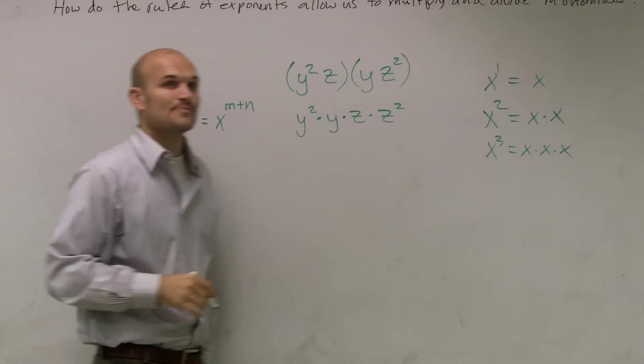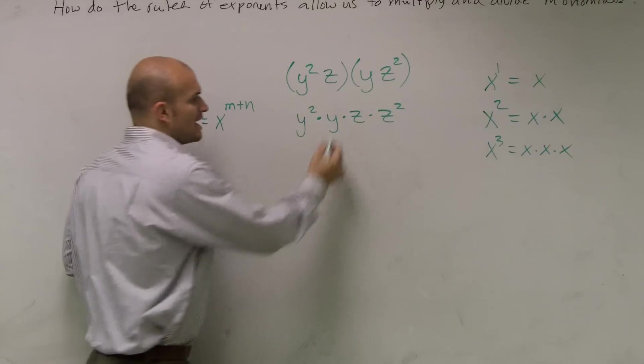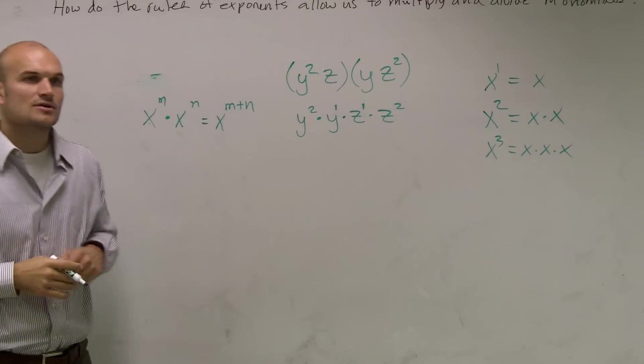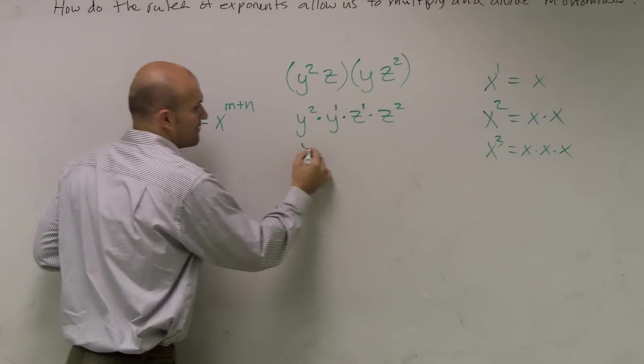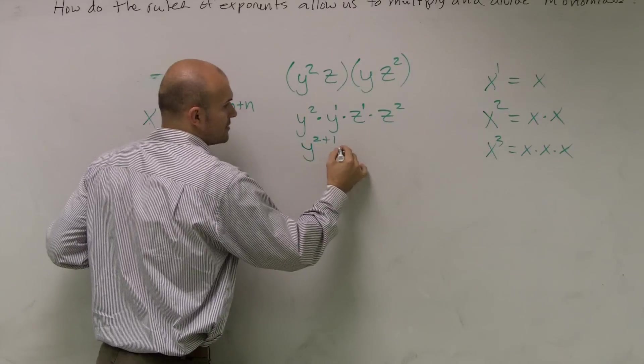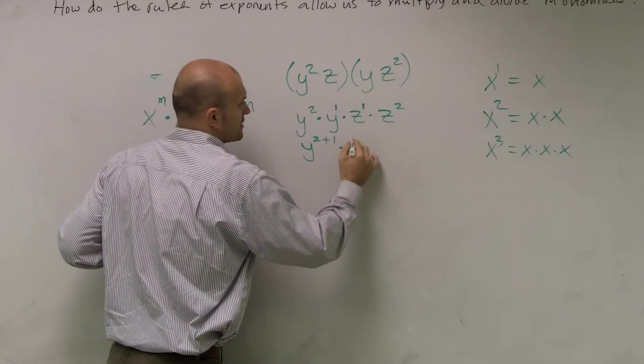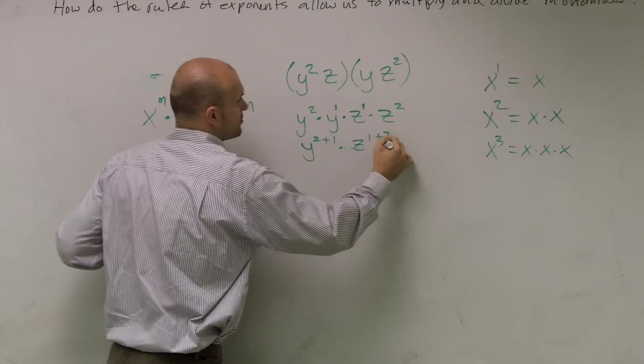So therefore, I can write a 1 up there and a z to the first. So now when I multiply these, I have y squared plus 1 times z to the first plus 2.